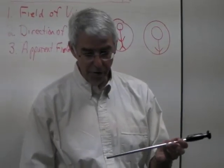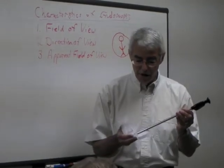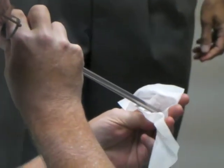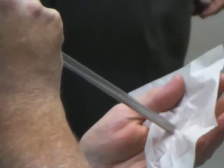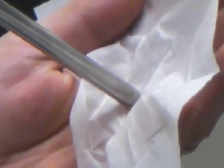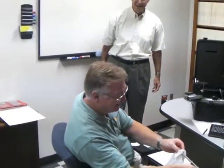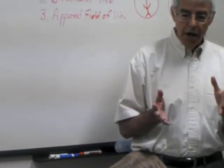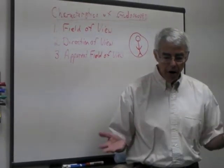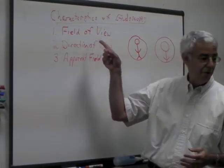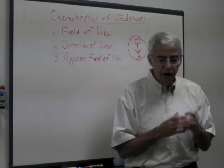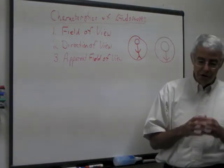Now I want to pass this laparoscope around — it's a 10 millimeter. Tell me what you see. Circle. Any difference between the circle and the arthroscope? It's bigger. That's the right answer. You have no idea what the field of view is because you've covered it, but you're seeing a bigger circle. The size of that circle is proportional to the apparent field of view.